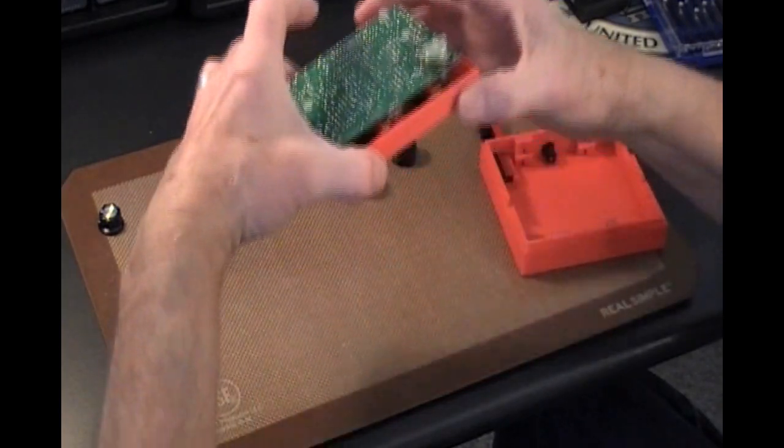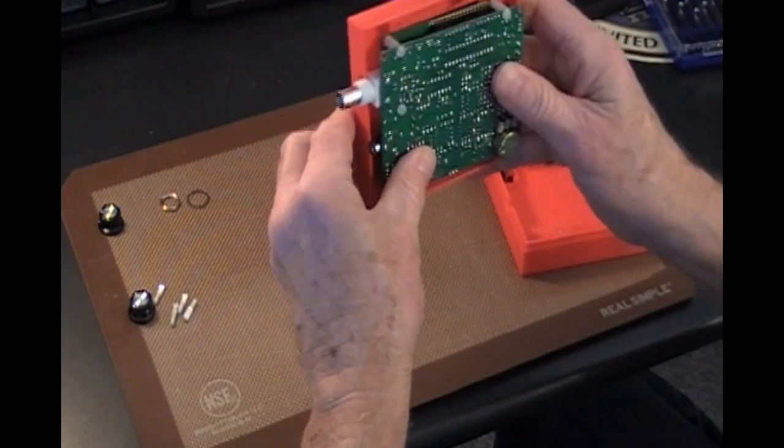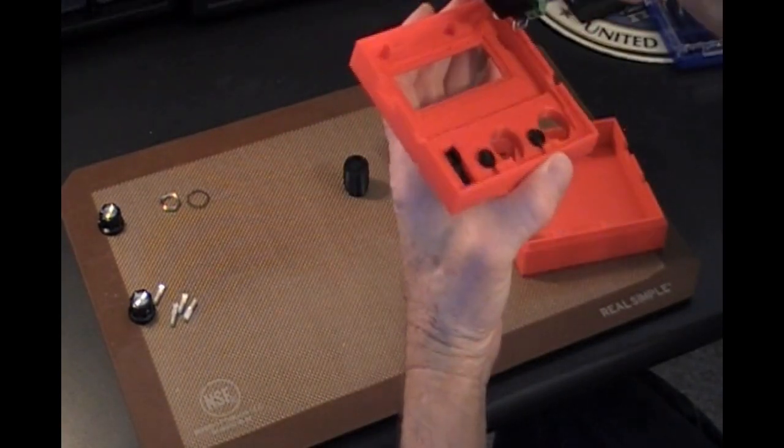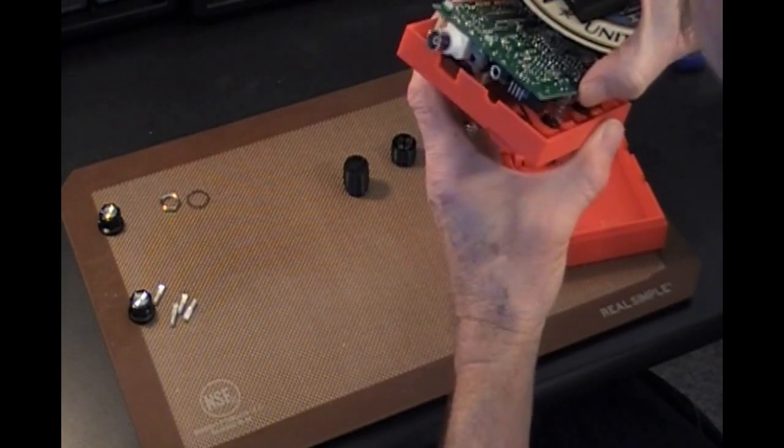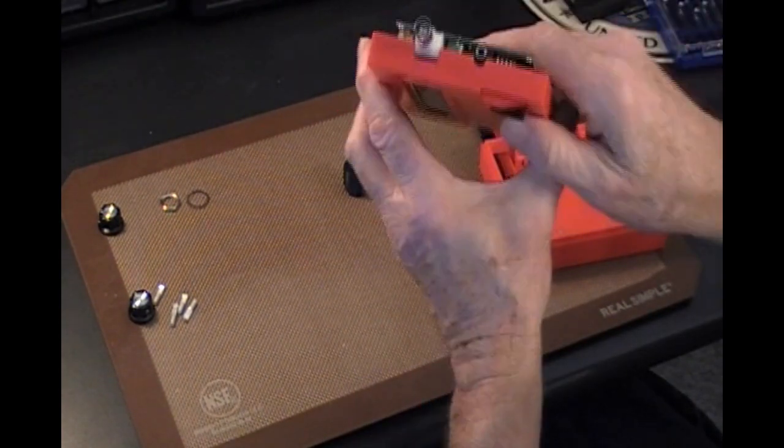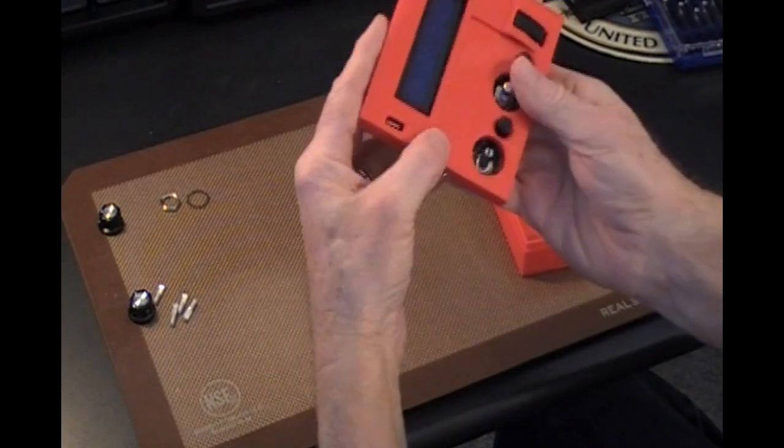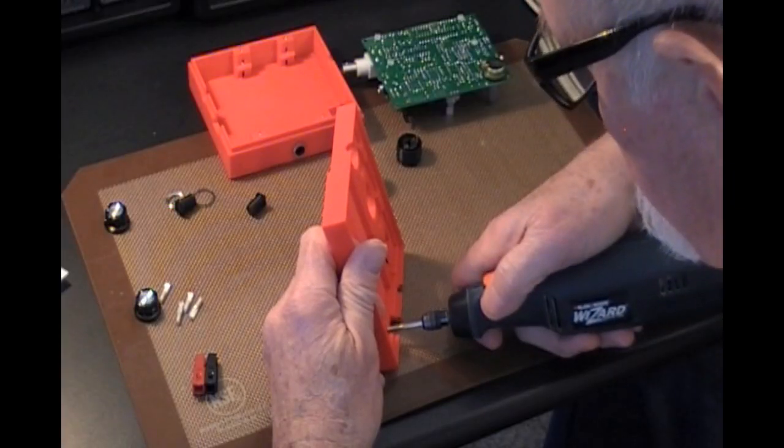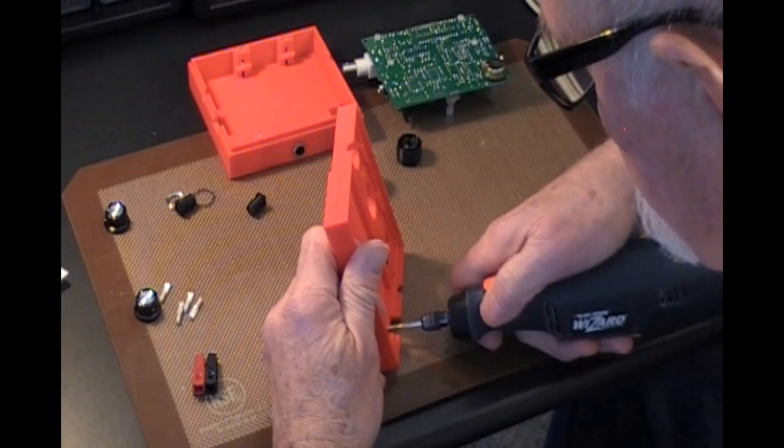I also removed the nut and lock washer on the antenna jack to get that out of the way. And then do a trial fit in the top half of the enclosure. Now Mike did say that these may not fit perfectly right out of the box, and mine in fact didn't. The antenna jack didn't fit down in the notch in the enclosure. And the opening for the key jack for the paddles had to be enlarged also.